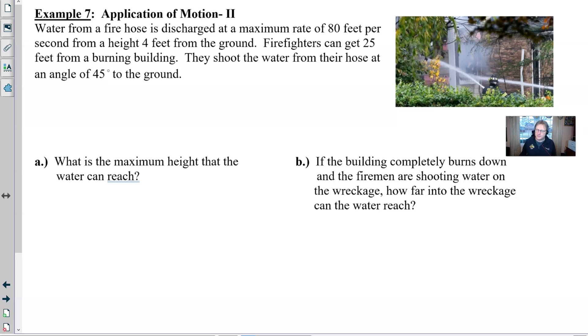So as with any vector value motion problem that deals with gravity, we have to set up our vector function that has the various components x and y assembled correctly. Obviously gravity is going to play a role into this. We have the x component not affected and then the y component that will be affected. So if you recall, the standard setup is your rate at which, in this case, the water is being shot times the time.